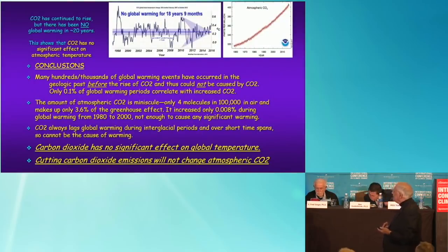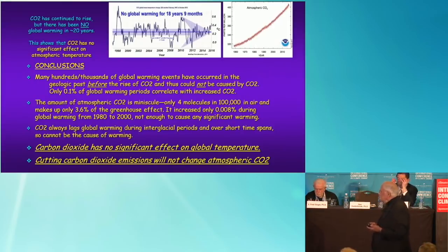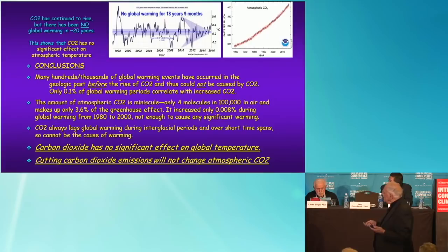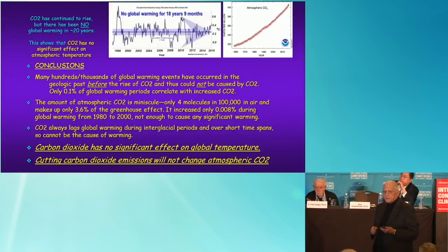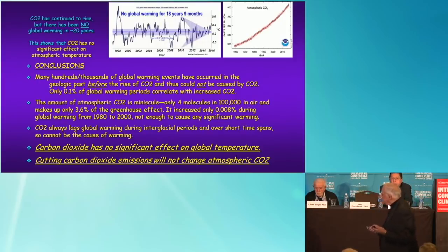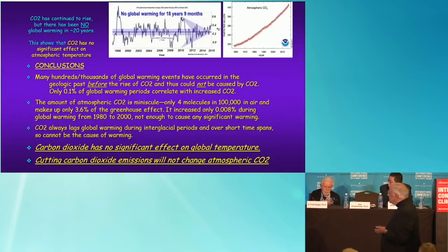So we can conclude that there have been many, many periods of global warming which could not have been caused by CO2. And if you add all these up, you can only get about one-tenth of one percent of global warming periods that correlate with CO2. Not very convincing — 99.9% of geologic warming in the past cannot have been caused by CO2. There is so little CO2 in the atmosphere that the conclusion is inescapable: carbon dioxide has no significant effect on global temperature.